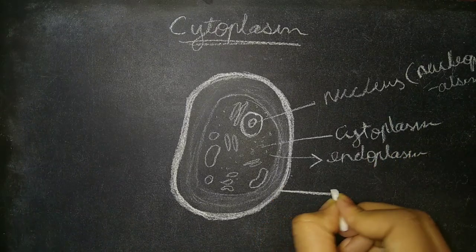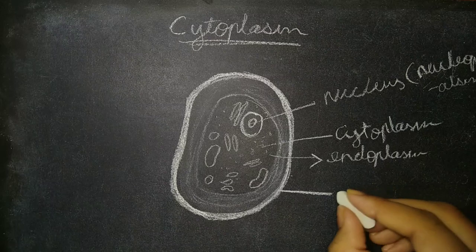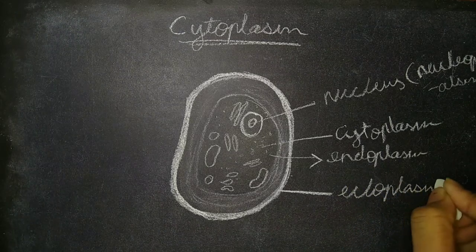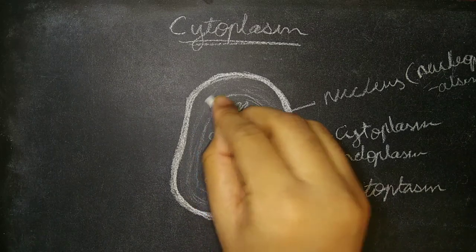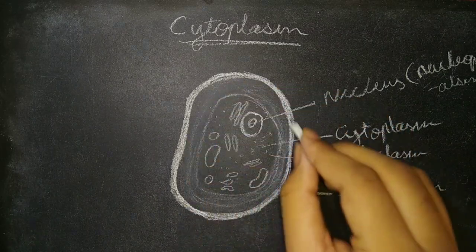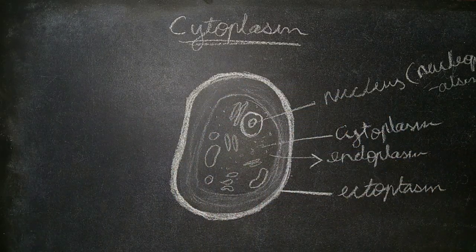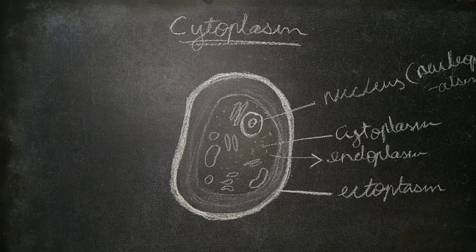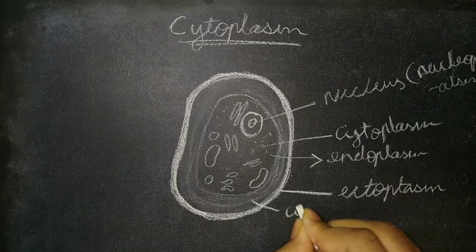The outer clear and glassy layer is also called ectoplasm. Also on this outer side you can see there is a layer of cytoplasm in which no organelles are held, and it is called cytosol.